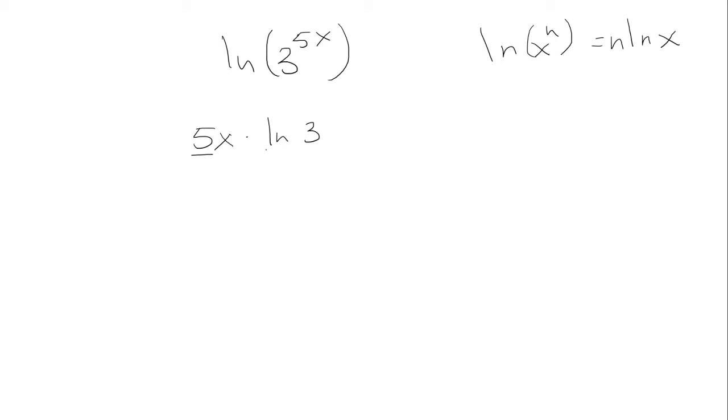Now, 5 and ln of 3 are constants, and you're multiplying it by x, so the derivative is just the constant. And that's 5 ln of 3.